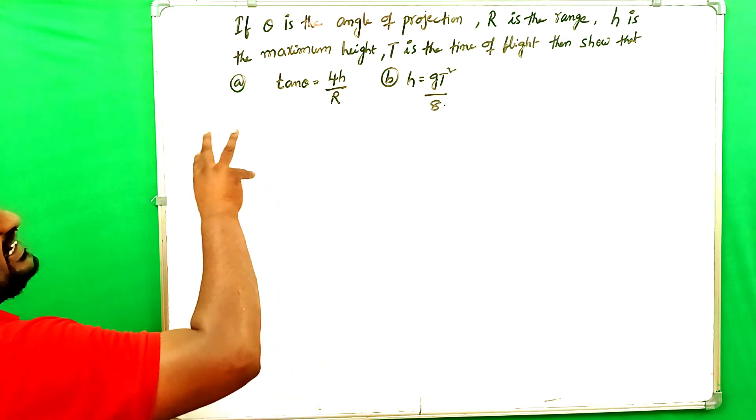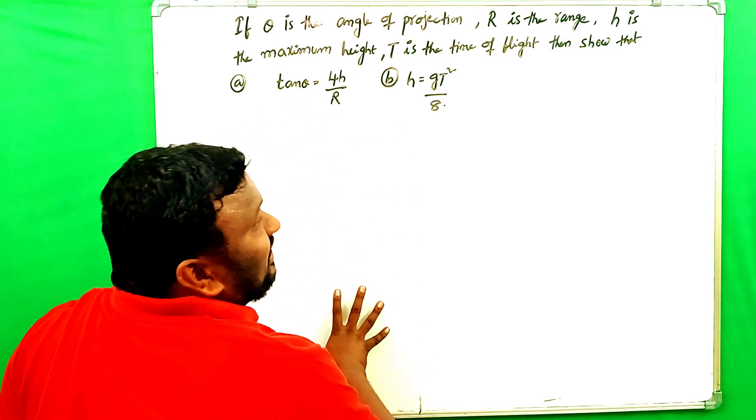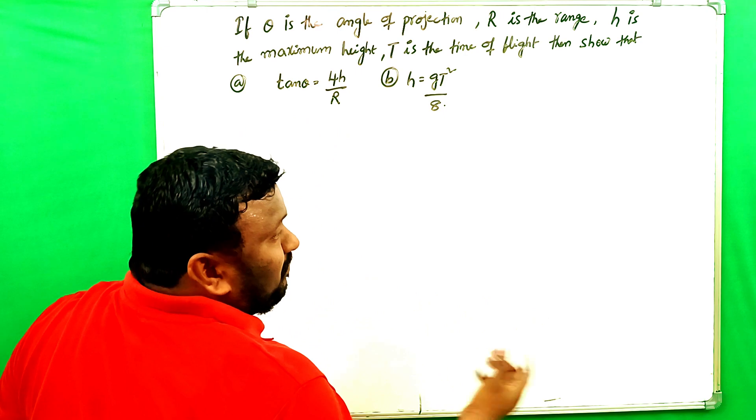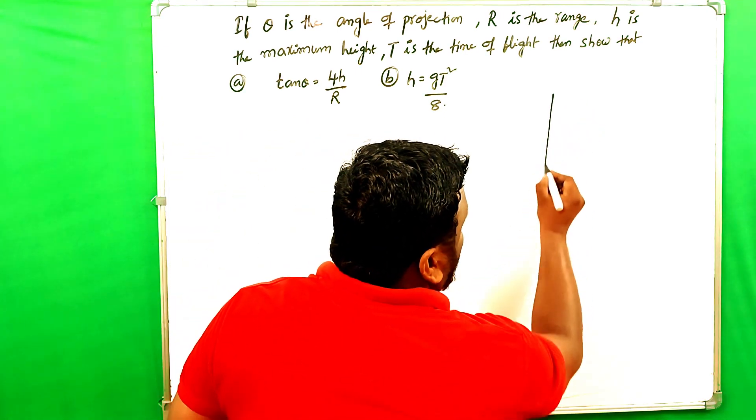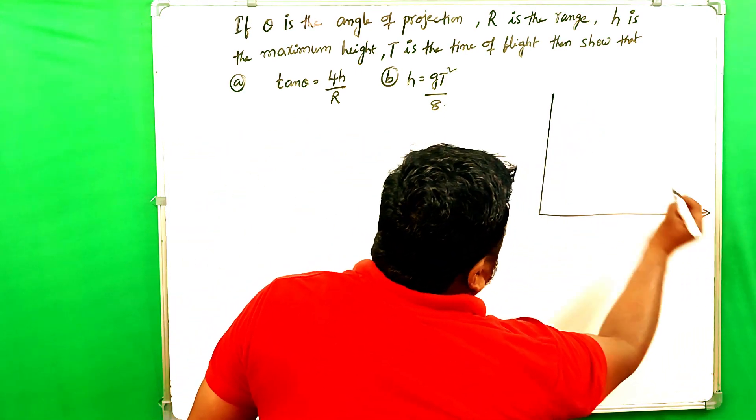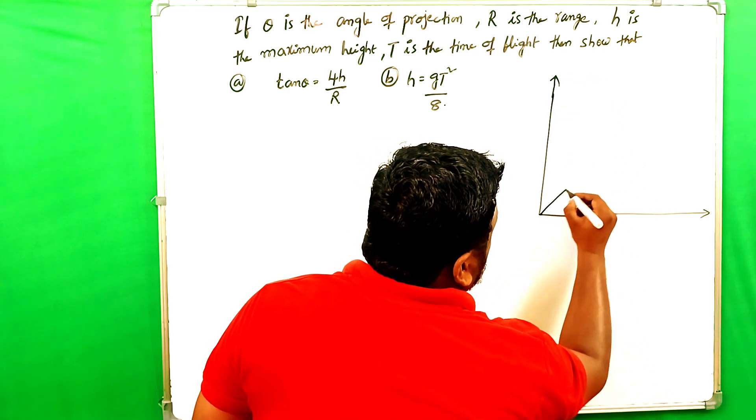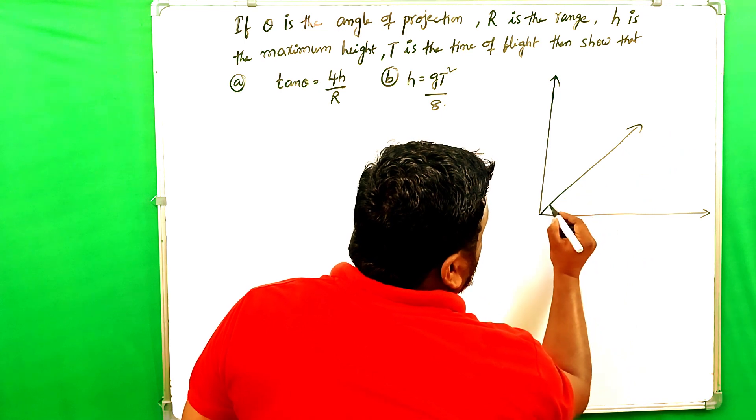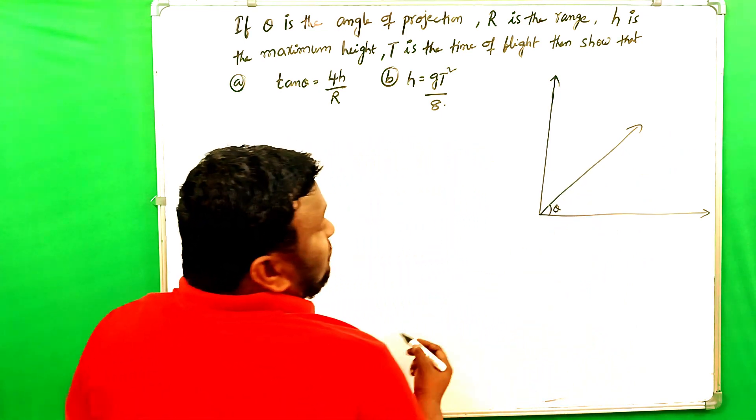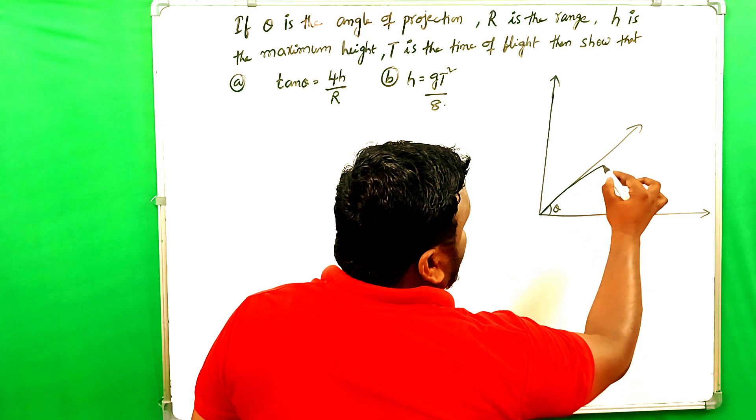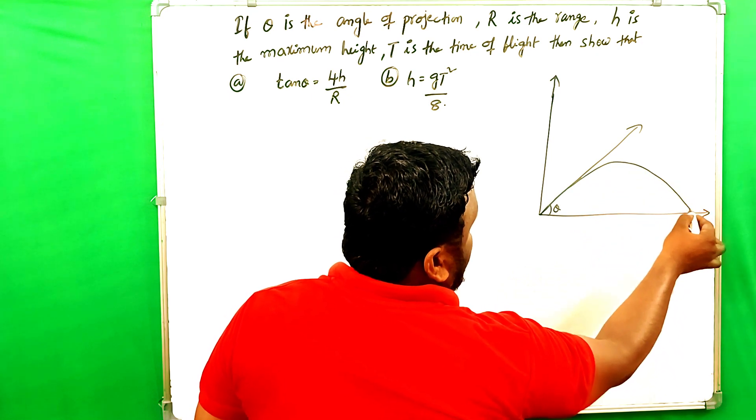Theta is the angle of projection. The angle of projection is about the projectile motion. First thing is, the projectile is projected into the air with an angle theta. Obviously, that again follows the path of parabola and reaches the height.